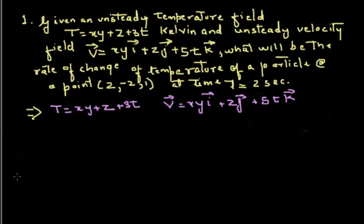The first problem goes like this. Given an unsteady temperature field T = xy + z + 3t kelvin, and an unsteady velocity field V = xyi + zj + 5tk. We need to find the rate of change of temperature of a particle at the point (2, -2, 1) at time t = 2 seconds. We are given both the temperature field equation and the velocity field equation.